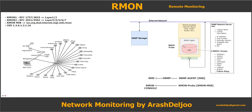The RMON probe uses the RMON MIB, or Management Information Base information, to send data to the RMON console, which may be one part of an SNMP manager — for example, SolarWinds. There are different categories of information available in RMON that will be explained in more detail.